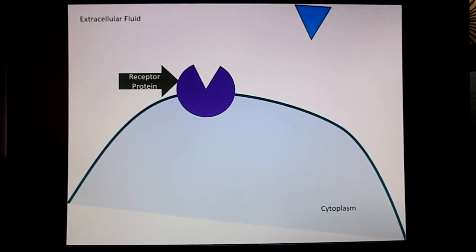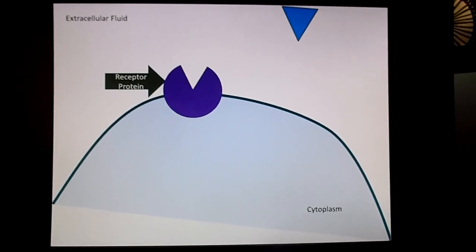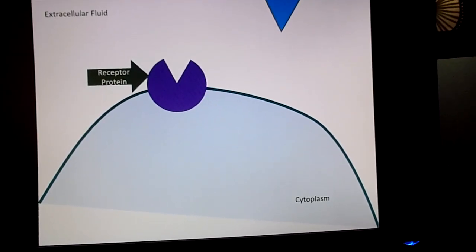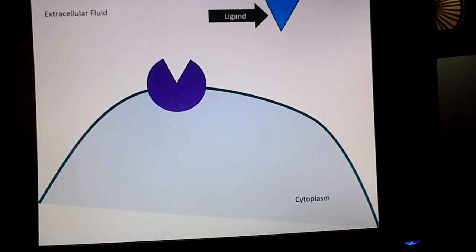It will receive signaling molecules sent throughout the body to cause stuff to happen inside the cell. Then we have a signaling molecule shown as a blue triangle. Now this signaling molecule is called a ligand.